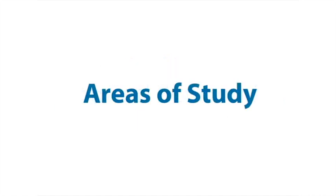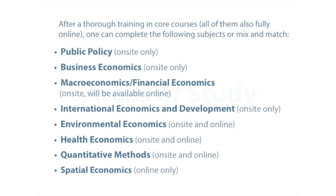We offer an extraordinarily broad variety of electives — 27 of them all together, soon to be 31. Rather than list them all, if you take a look at the slide, I've grouped the courses by area. You don't have to focus on any particular area; you can mix and match as you wish. All of these subjects can be studied on-site and many of them can be studied online. The slide shows you which are available online.